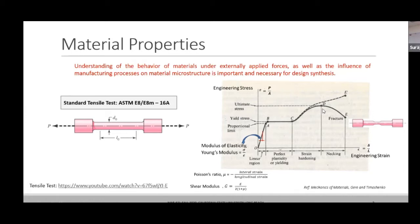For engineering or design calculations, we are not concerned about true stress. In the standard tensile test, you do not measure the reduction in cross section at every time step — you measure the load continuously and divide it by the original cross section area, and that is what we call engineering stress. So in design calculations, we take engineering stress into account: the actual load divided by the original cross section area.